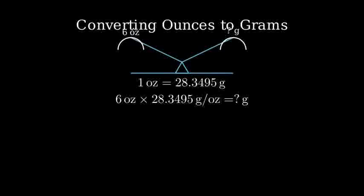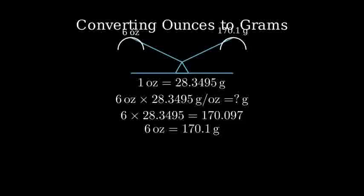Let's solve this step by step. 6 times 28.3495 equals 170.097. Therefore, 6 ounces equals approximately 170.1 grams.